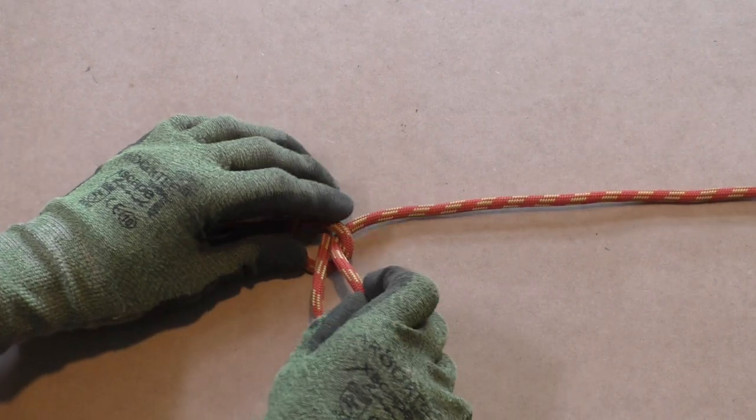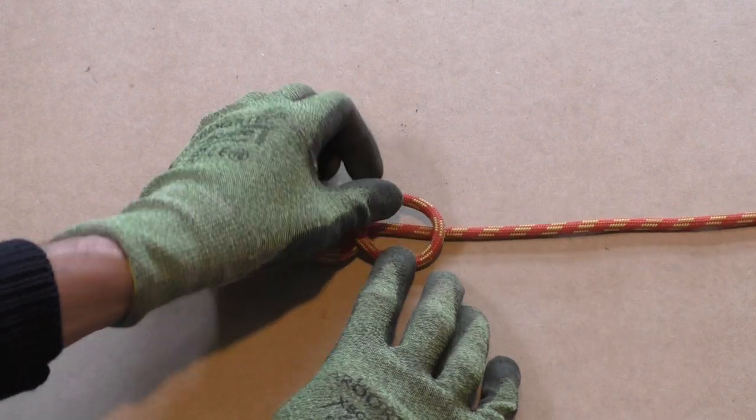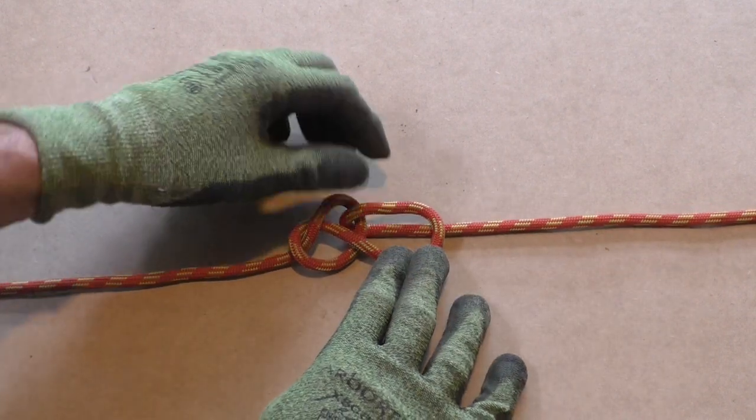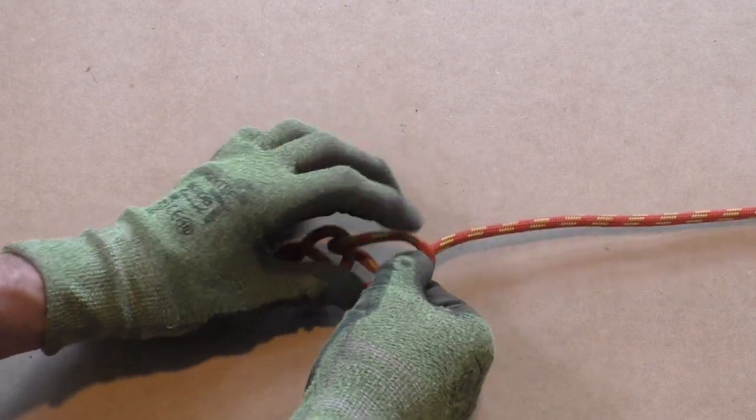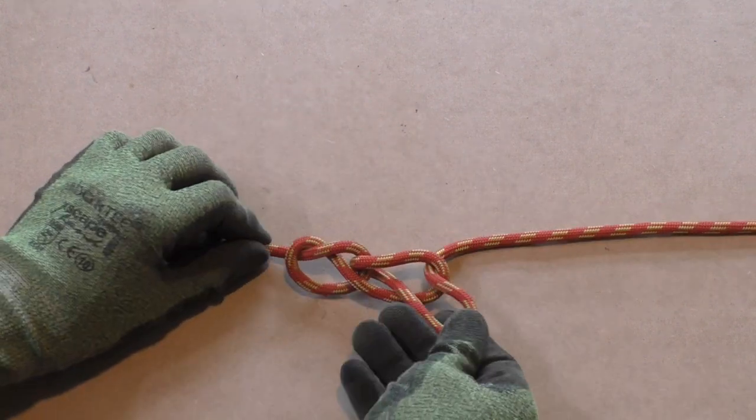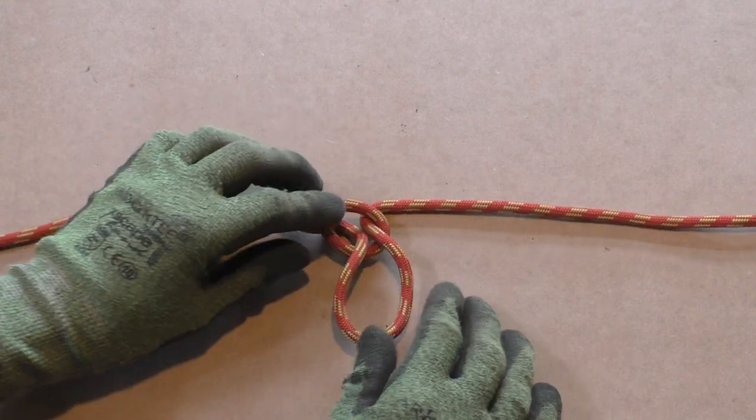Now take the bight and lay it over the standing part again. Next, we pull another bight through the loop to add the next link to the daisy chain. If you pull on the left part of the bight, you can tighten up the links of the chain sinnet.